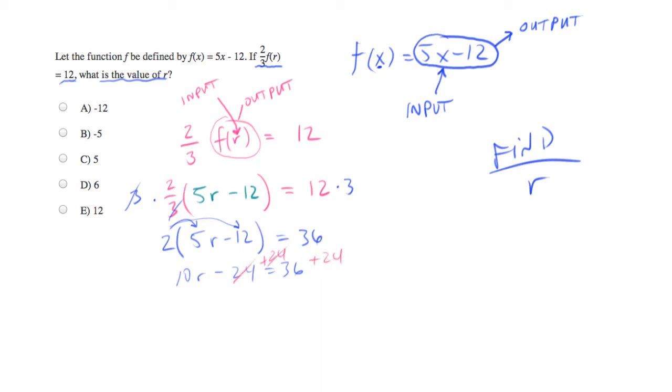And we'll have 10r equals 60. Divide both sides by 10. And we'll be left with r equals 6, which is answer choice D.